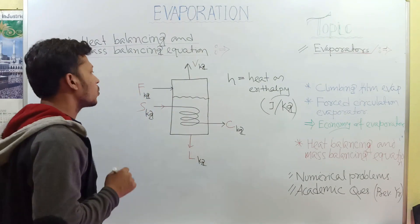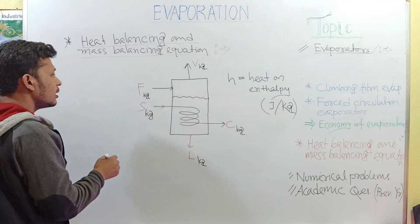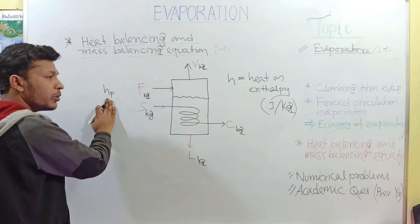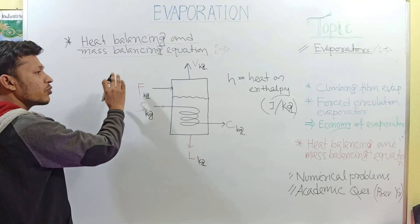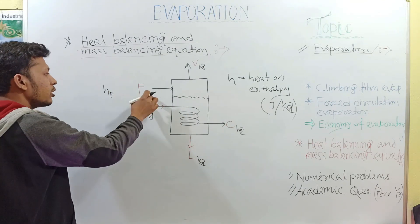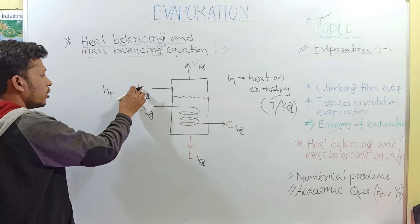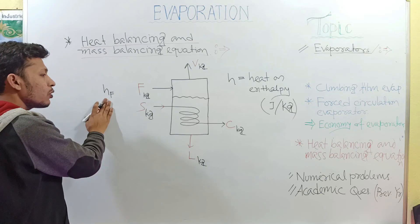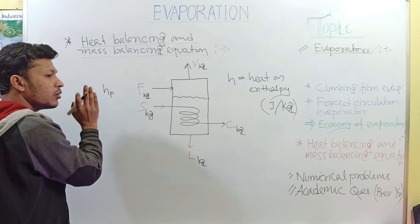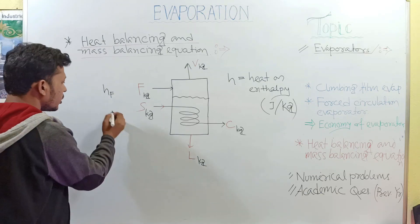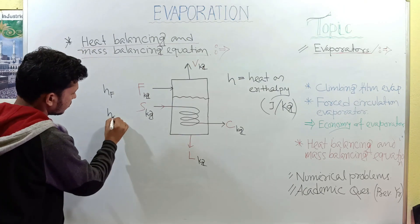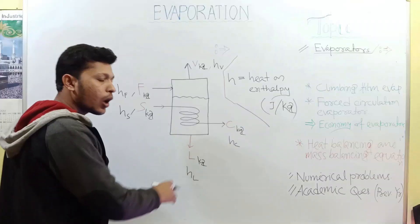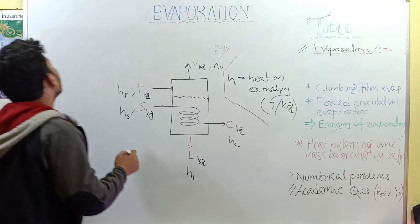Consider also that feed contains enthalpy as hf. This amount of heat is present per kg. When you consider the total heat present in the feed, you multiply F and hf to get the total heat. Here hf is the enthalpy present per kg. The same applies for all other streams.